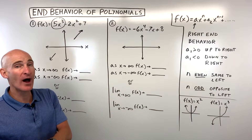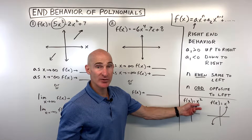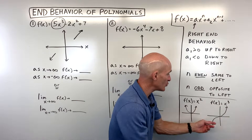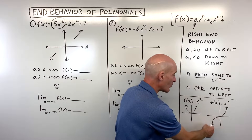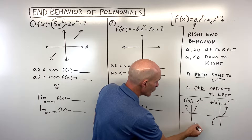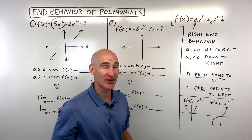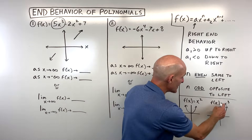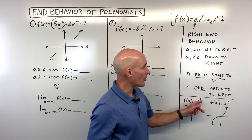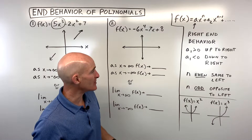Why does even vs. odd degree work this way? Think of familiar examples: f(x) = x² has both ends going up — same direction, even degree. Whereas x³ goes up to the right but down to the left — opposite directions, odd degree. If you had negative x², the graph opens down and both ends go down — same direction because it's even. If you had negative x³, it goes down to the right but up to the left — opposite, because odd degree means opposite direction.